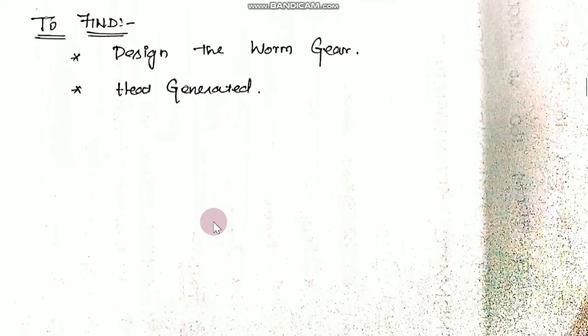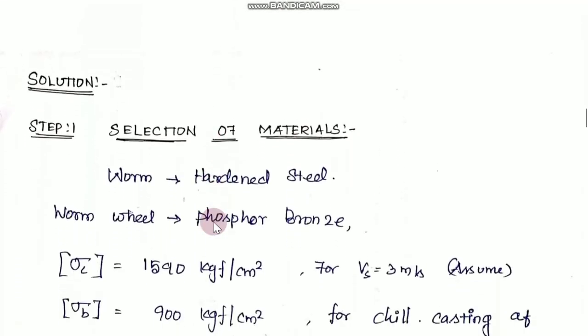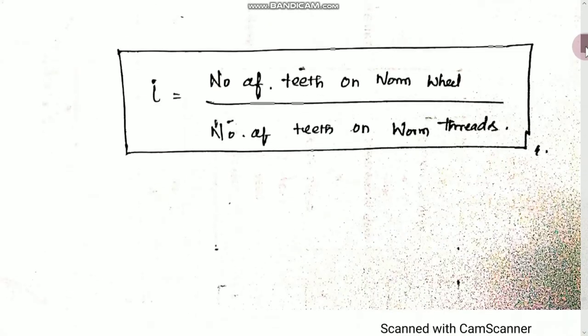The solution begins with the first step: selection of material. For spur, helical, bevel, and worm gears, the first step is always selection of material. We also need to find out the speed ratio. The speed ratio formula is i, which equals the number of teeth on the worm wheel divided by the number of teeth on the worm thread.